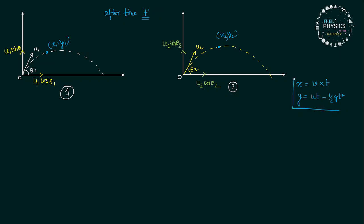So, the equations will be: For particle 1, x1 equals u1 cosθ1 into t, and y1 equals u1 sinθ1 into t minus half gt squared. Similarly, x2 will be u2 cosθ2 into t, and y2 equals u2 sinθ2 into t minus half gt squared.